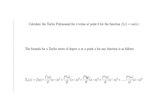Since a equals zero, the (x minus a) terms become simply x, x squared, x cubed, and so on. And the factorials — for example, 4 factorial — are calculated as 1 times 2 times 3 times 4, up to whatever number we need.